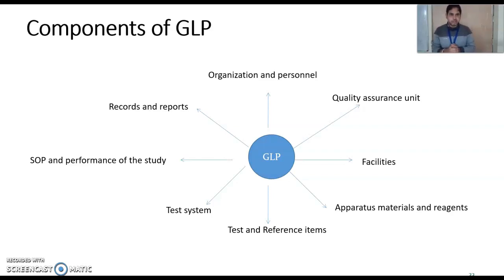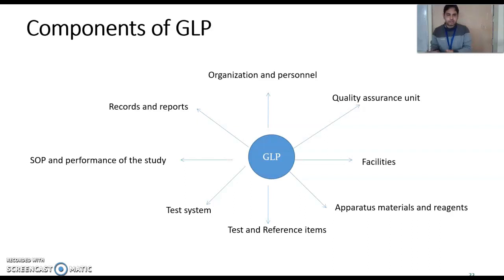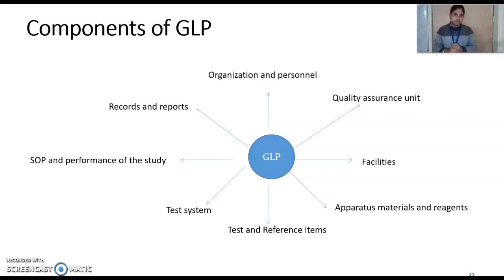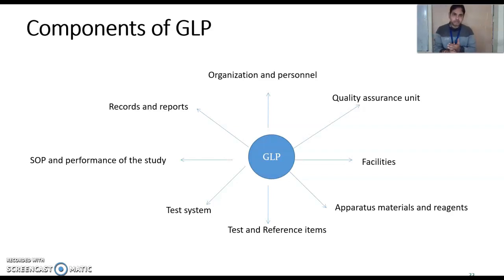Another component is the Quality Assurance Unit, which also has a number of people depending upon the requirement. The major objective of the Quality Assurance Unit is to assure the quality of the data being generated from the laboratory. This unit performs time-to-time internal audits and checks all raw data — whether you are planning your studies correctly, performing your studies correctly, and how you are archiving your data.